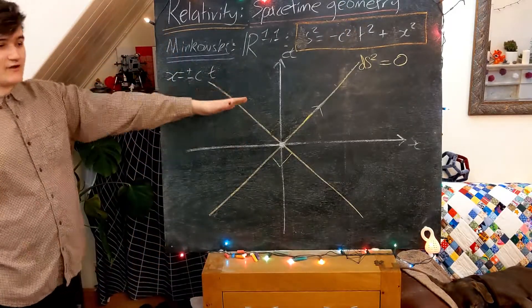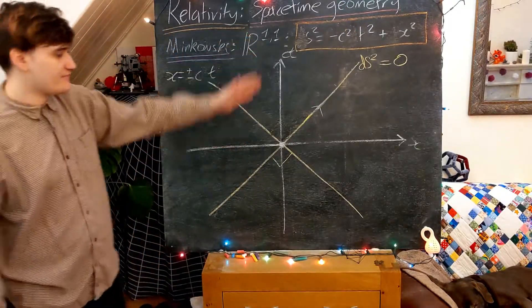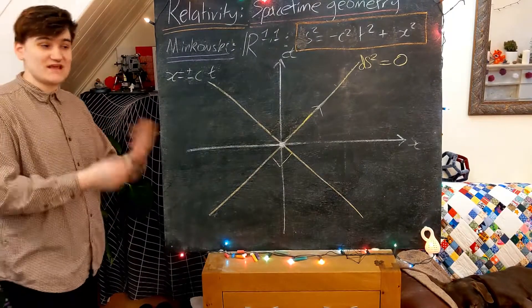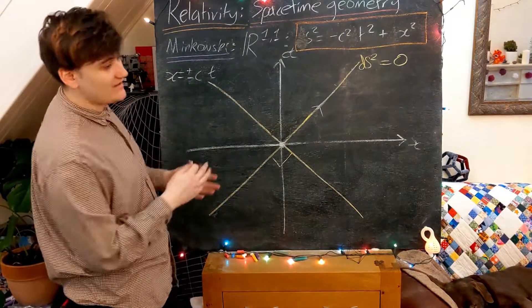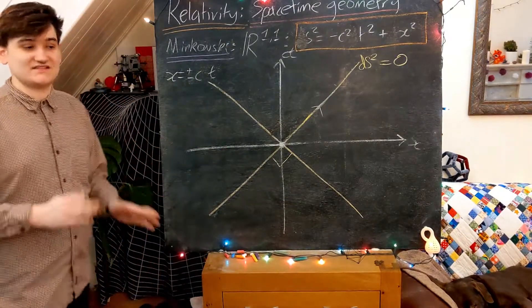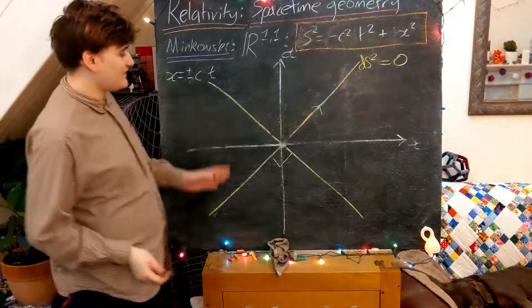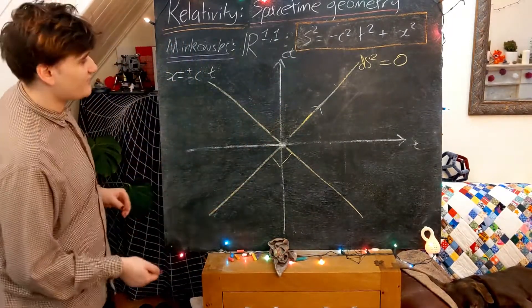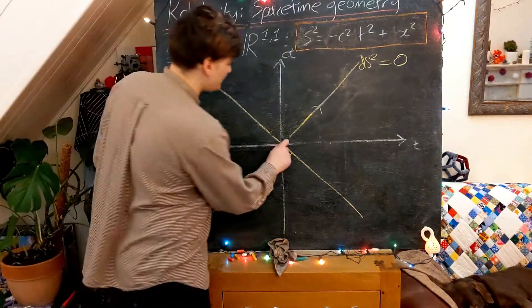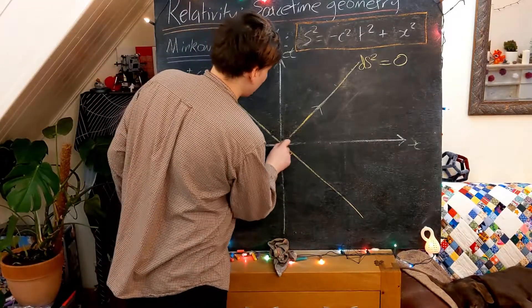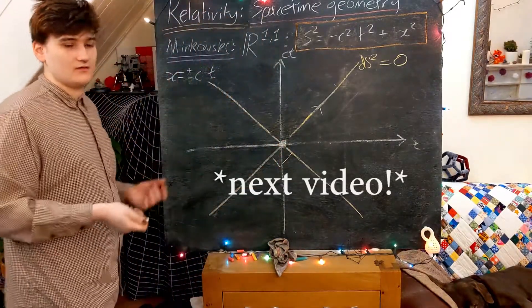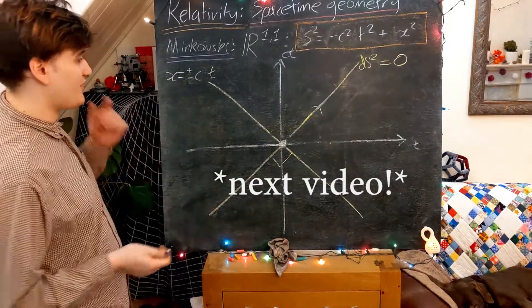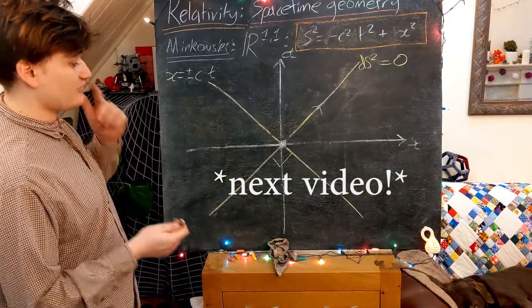These zero-distance-from-the-origin points — the light cone — now separate Minkowski space into three distinct regions. The points that lie on the two lines have zero space-time separation from the origin. Let's now consider the points which have a positive or negative separation from the origin and see what they represent.